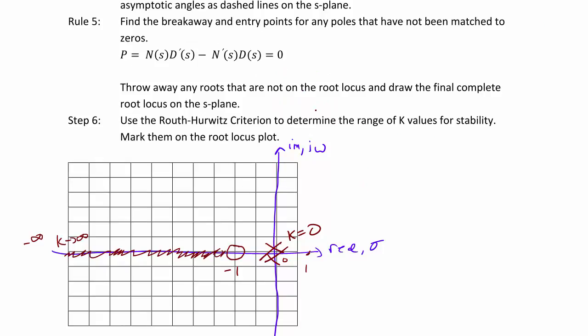So next, we're going to calculate the breakaway and the entry points for the loci. So to do this, we have k is equal to negative D(s) over N(s), or negative s squared over s plus 1. And recall that we take the derivative with respect to s. So using N(s)D'(s) minus N'(s)D(s) yields the following equation.